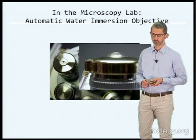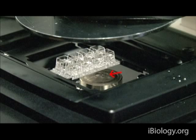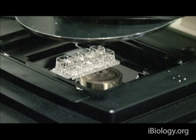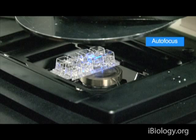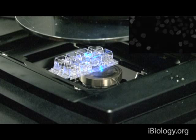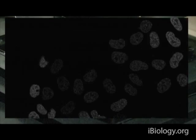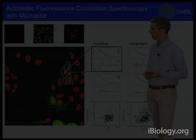We will step out to the lab to look at how automatic water immersion microscopes are actually working. The cap on top of the objective is filled with water automatically. Then the turret moves back to its initial set position. The focus is adjusted and images and FCS data are acquired automatically. To keep the water level constant, refilling occurs at regular intervals.